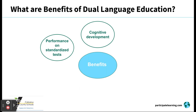Another benefit is cognitive development. DLI students typically develop greater cognitive flexibility, demonstrating increased attention and memory, superior problem-solving skills, as well as an enhanced understanding of their primary language. Developing proficiency in two languages is associated positively with greater cognitive flexibility and awareness of language, which contributes to academic achievement.